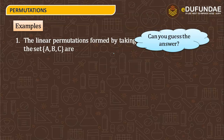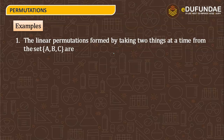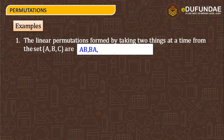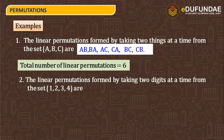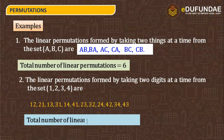Example: find the linear permutations formed by taking two things at a time from the set {a, b, c}. The possible arrangements are: ab, ac, ba, bc, ca, cb — and also pairs like 1-2, 1-3, 2-3 and their reverses. The total number of permutations is 12.